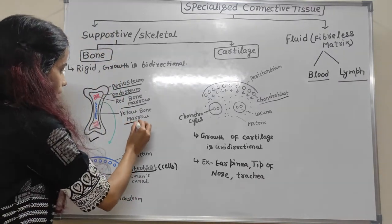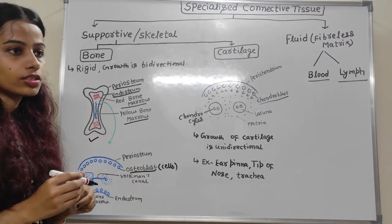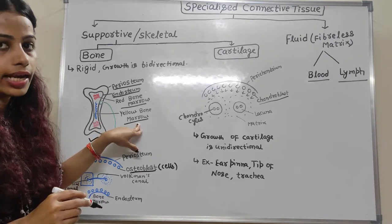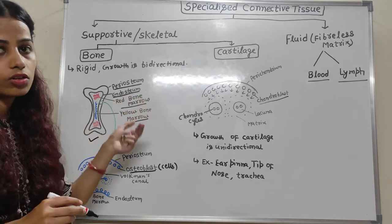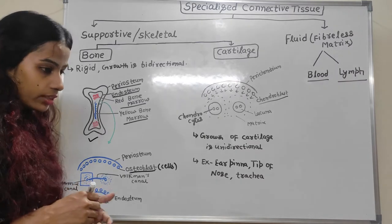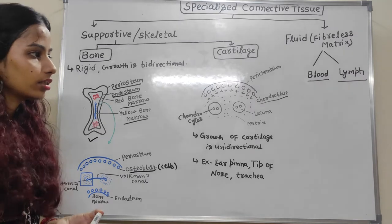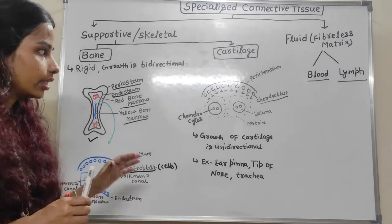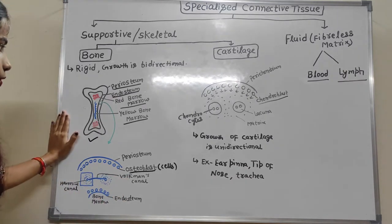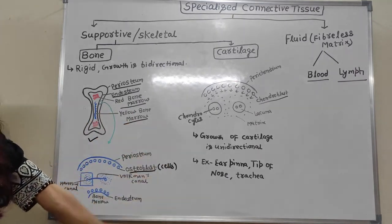Yellow bone marrow is used during emergency situations. When extra bleeding happens, yellow bone marrow acts like red bone marrow and also forms RBC. As seen in the femur bone — the longest bone of the body — there is a hollow space containing liquid substances where bone marrow is formed. This contains both red and yellow bone marrow.